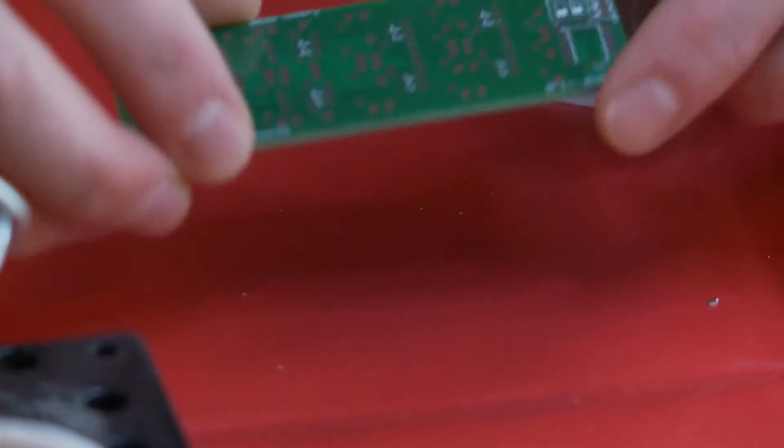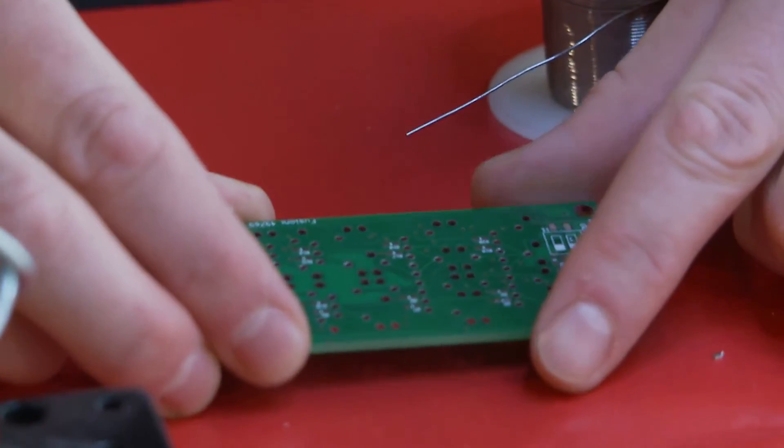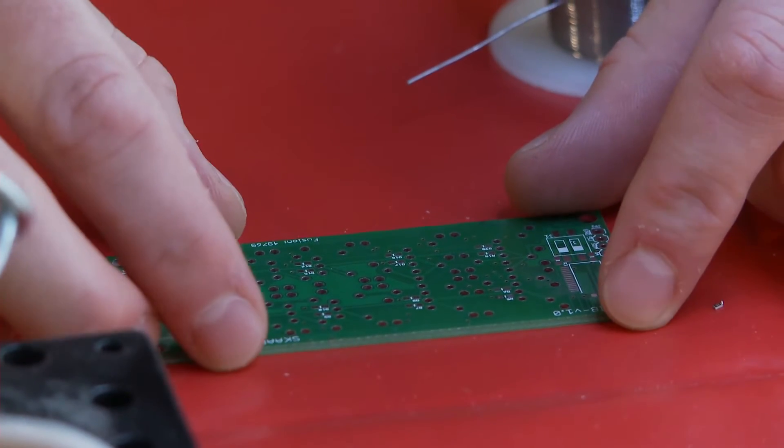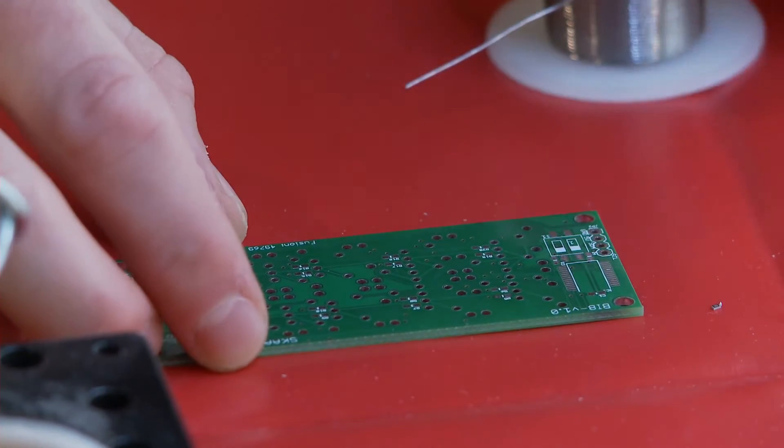The first thing that I am going to solder are the resistors and I will start with the 270 ohm resistors for the LEDs of the buttons.